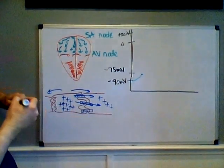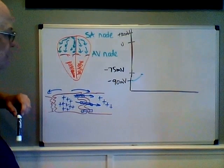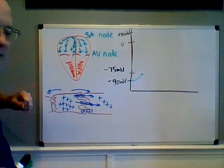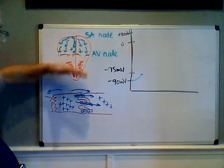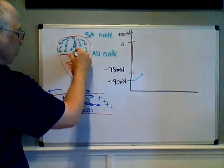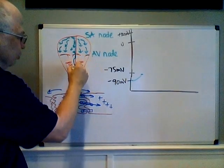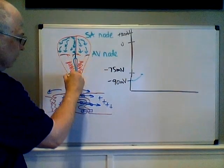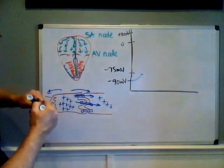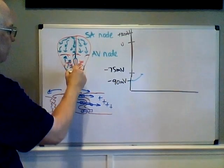Dense connective tissue does not conduct action potentials or electricity very well, so the fibrous skeleton of the heart essentially stops the action potential from spreading directly to the ventricles. By the time the action potential stops at the fibrous skeleton, it has reached the AV node. From there it runs through the bundle of His — also called the atrioventricular bundle — then spreads through the two bundle branches lying in the interventricular septum, all the way down, and then hits the Purkinje fibers. That's where the first ventricular muscle cells begin being stimulated, and the action potential spreads through the ventricles squeezing from the apex toward the base.